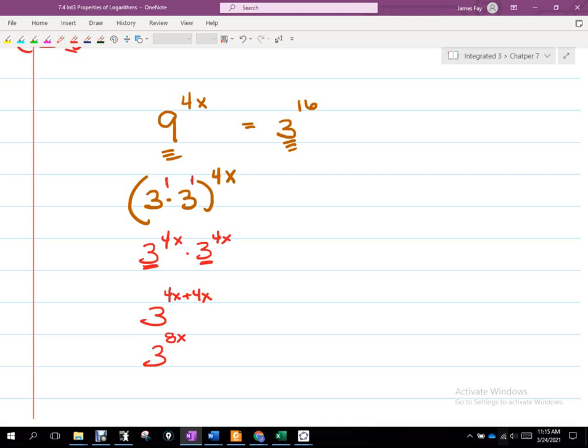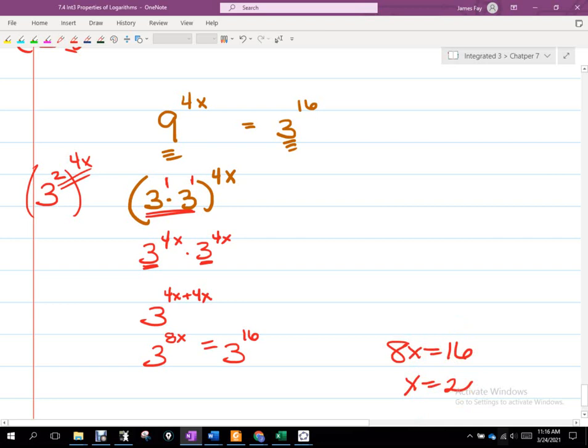I don't want you to go through that approach that we did in red there because that's messy. What Maya then said, she changed what she said. She said, instead of writing it as 3 times 3, let's write it as 3 squared. So if I write this as 9 as 3 squared, I should still have this 4x right there. And now that's a power to a power. So you multiply the exponents now, and I get 2 times 4x, which is still 8x. Either approach is okay. I think the power to a power is better. So I get 3 to the 8x equals 3 to the 16th. Now what do we know about our bases? They're the same. So the exponents then must have to be the same. And we can solve that and get x to be 2.